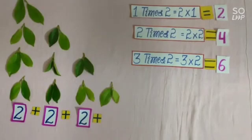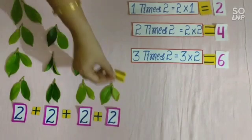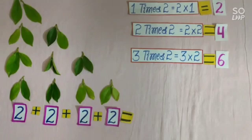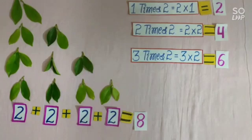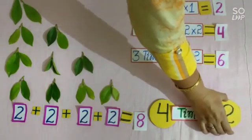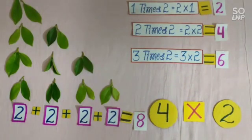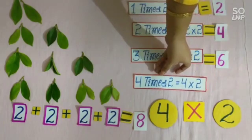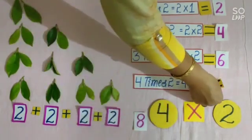Students, we had 6 leaves. Now we take 2 more leaves. Now students, we have 8 leaves and we have 4 groups of leaves. So students, we will write here: 4 times 2. We will put the sign of multiply in place of times. So students, we will write here: 4 times 2 is equal to 4 multiplied by 2 is equal to 8.